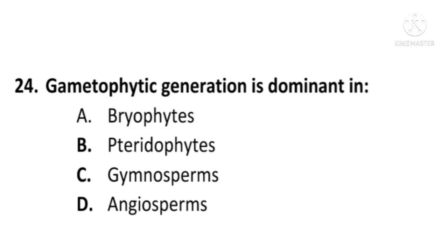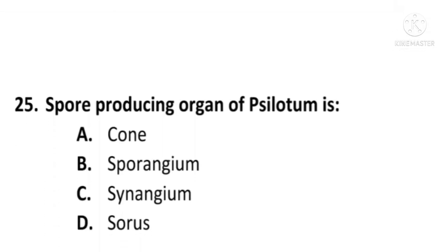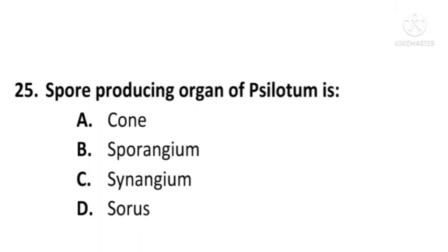Next question: The spore-producing organ of Psilotum is — A) Cone, B) Sporangium, C) Synangium, or D) Sorus. The correct option is C, Synangium. The spore-producing organ of Psilotum is the synangium; C is the correct option.